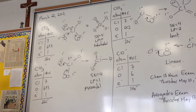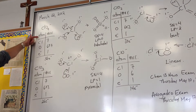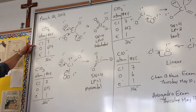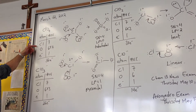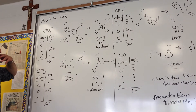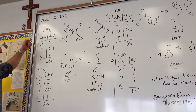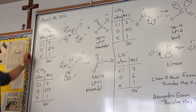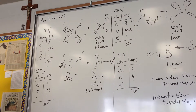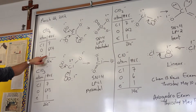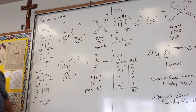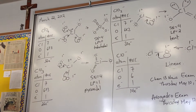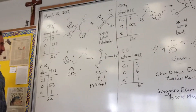We start off with perchlorate. What we do first is an accounting of how many valence electrons there are in the atoms involved. Chlorine is 7 because it's in group 17 — subtract 10 from the group number to find the valence electrons. There are 4 oxygen atoms, each with 6 electrons, and then you add 1 for the negative charge. So a total of 32 electrons should be found in the Lewis structure for perchlorate.